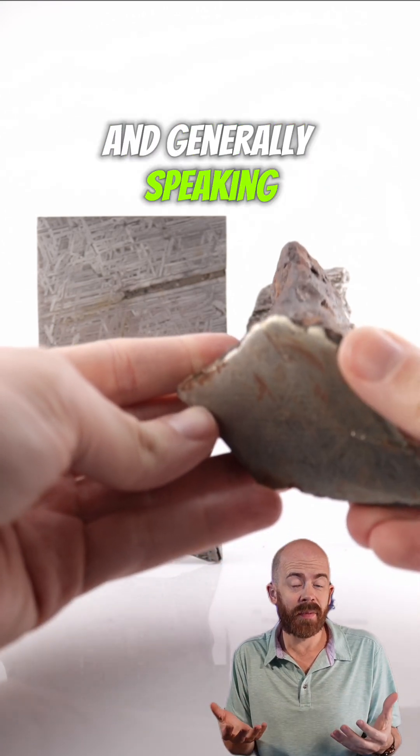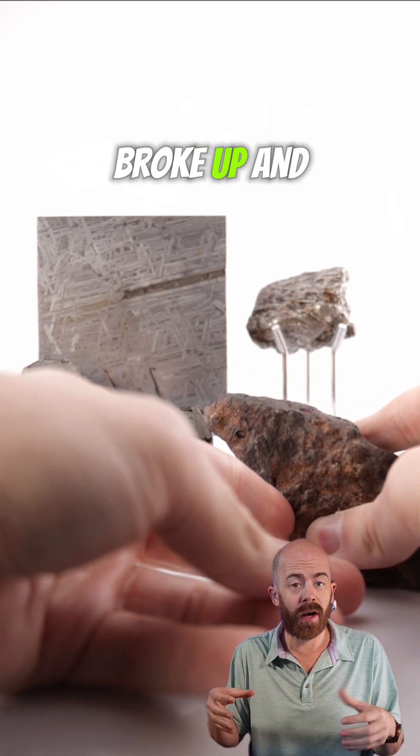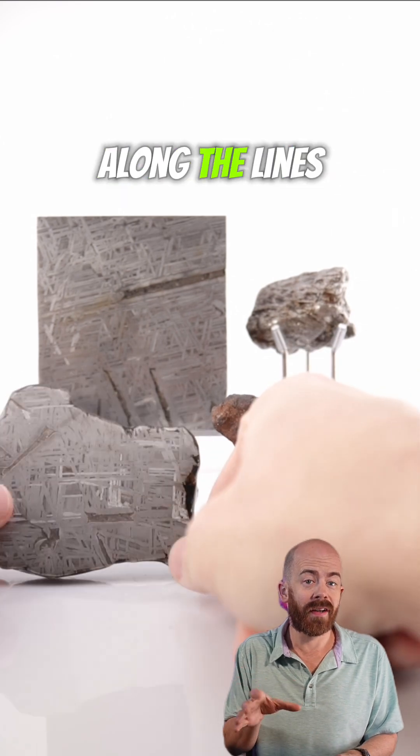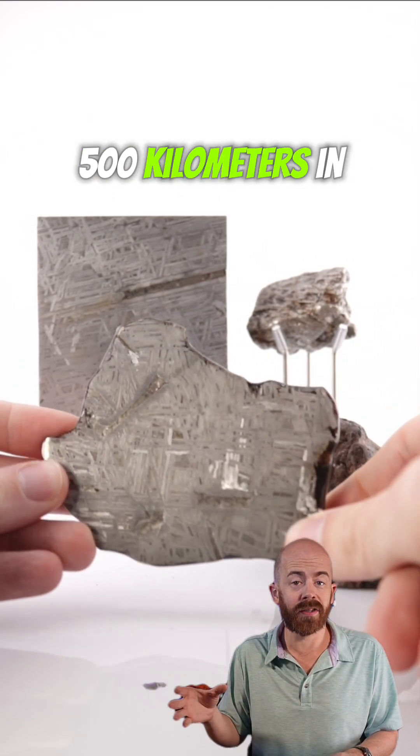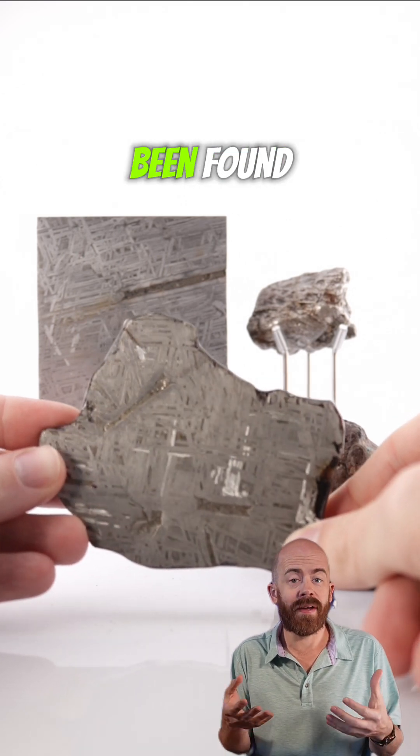It's quite a large amount, and generally speaking, we believe that the meteorite came into our atmosphere and at some point broke up and spread across what ended up being a pretty large strewn field. We're talking somewhere along the lines of 400 to 500 kilometers in area where pieces of this meteorite have been found.